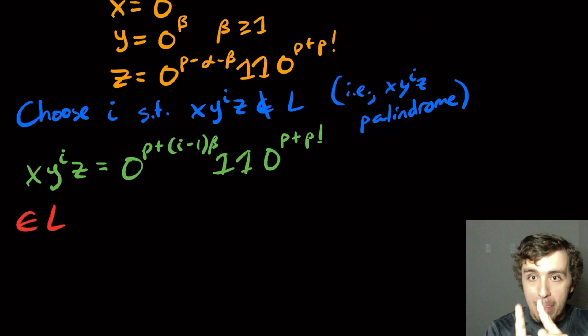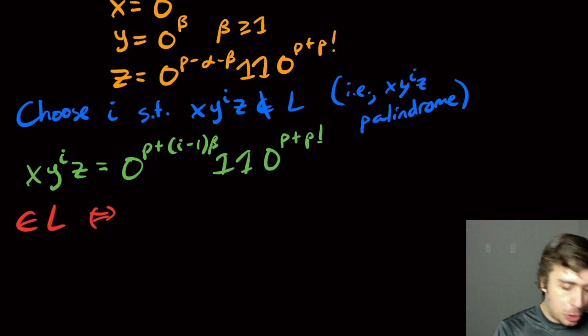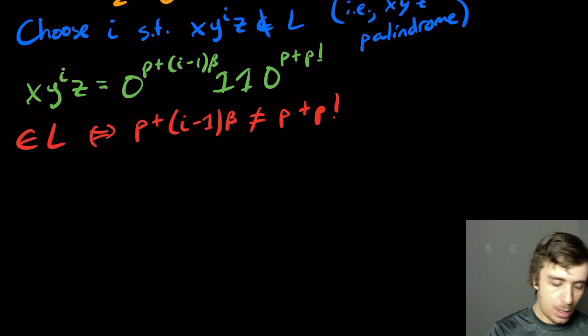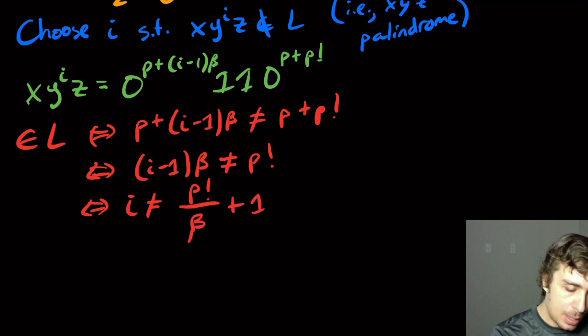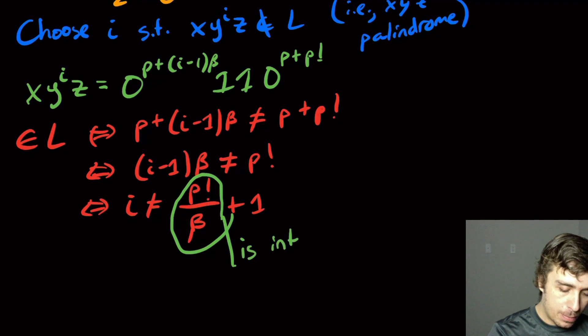So it's in the language means it's not a palindrome if and only if the two runs of zeros are different because the ones aren't really contributing anything to whether this thing is a palindrome or not. So if and only if P plus I minus 1 times beta is not equal to P plus P factorial. So this is if and only if, if you subtract P from both sides, I minus 1 times beta is not equal to P factorial. So that means if and only if I is not equal to P factorial over beta plus 1.